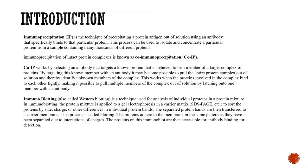Immunoblotting, which you may know as Western blotting, is a technique used for analysis of individual proteins in a protein mixture. In immunoblotting, the protein mixture is applied to a gel electrophoresis in a carrier matrix to sort the proteins by size, charge, or other differences in individual protein bands. The separated protein bands are then transferred to a carrier membrane — this is called blotting. The proteins adhere to the membrane in the same pattern as they were separated due to charge interactions, and are then accessible for antibody binding for detection.